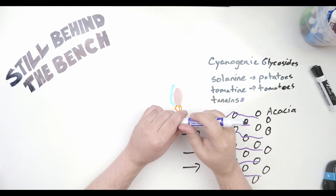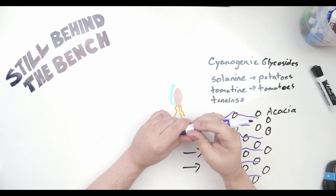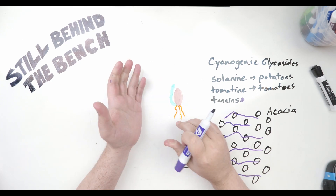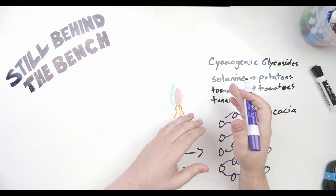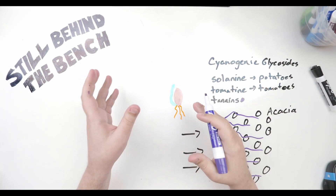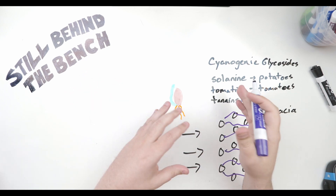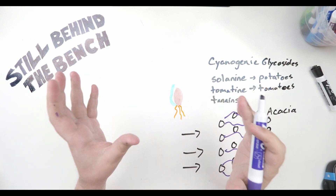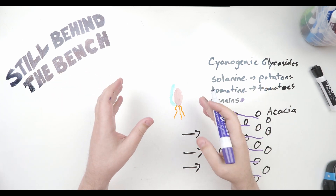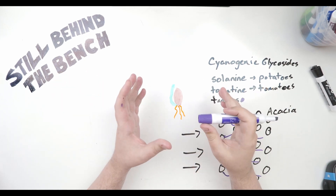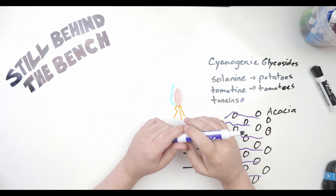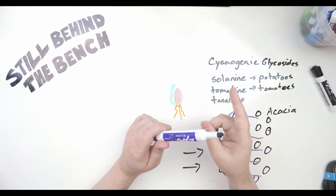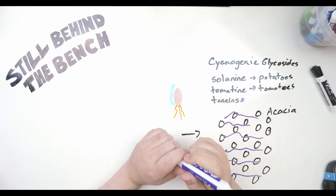That's it for this video on cyanogenic glycosides, glycosidic nitriles, fruit mashes, vegetable mashes, grain mashes, and ethyl carbamate. I hope you learned something. Please click like and subscribe if you want to see more, and have a great week.